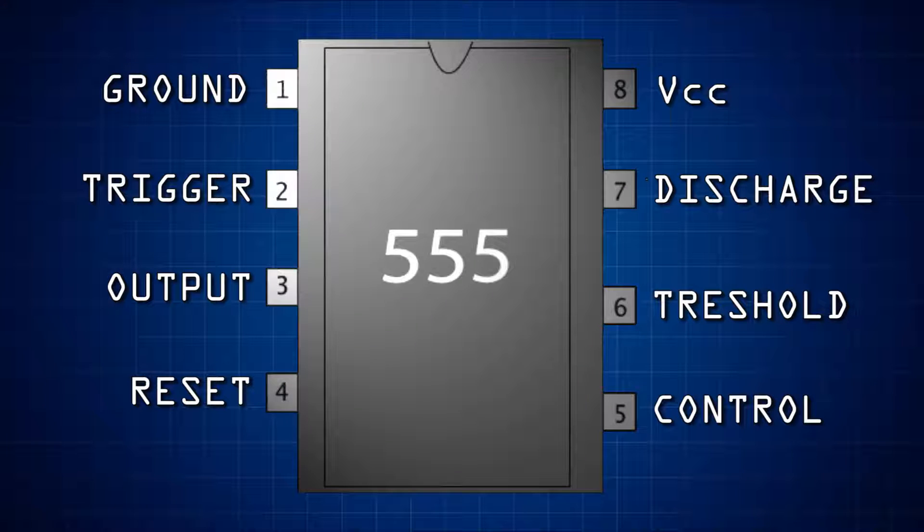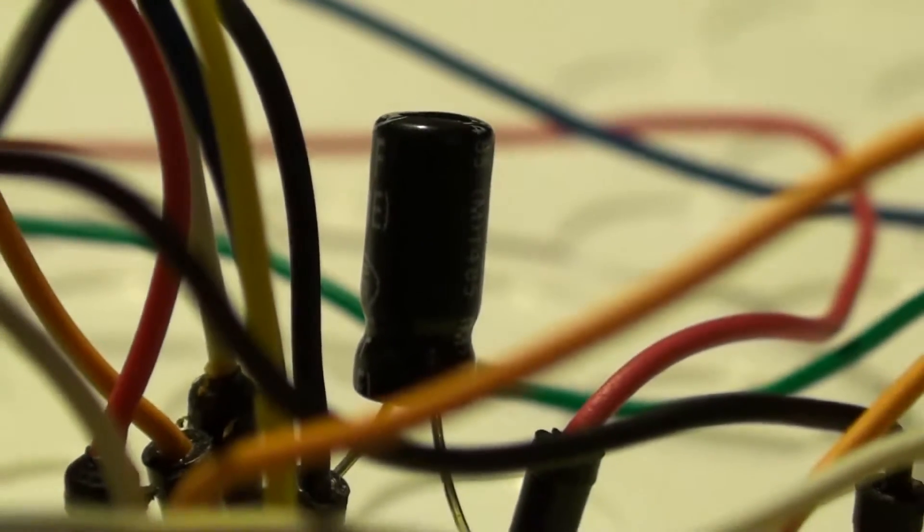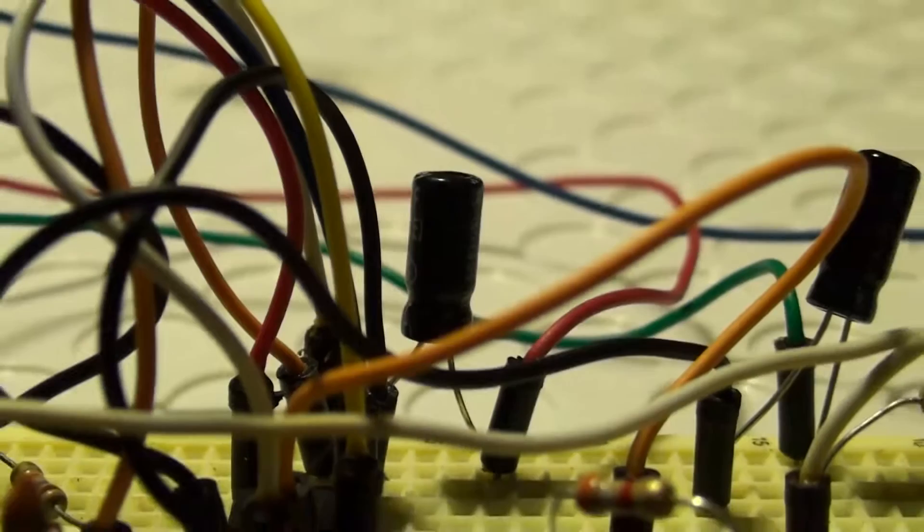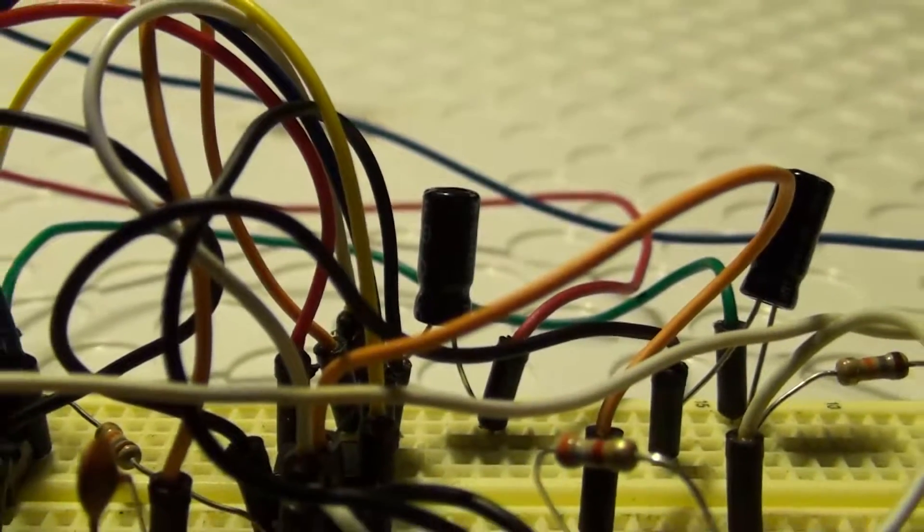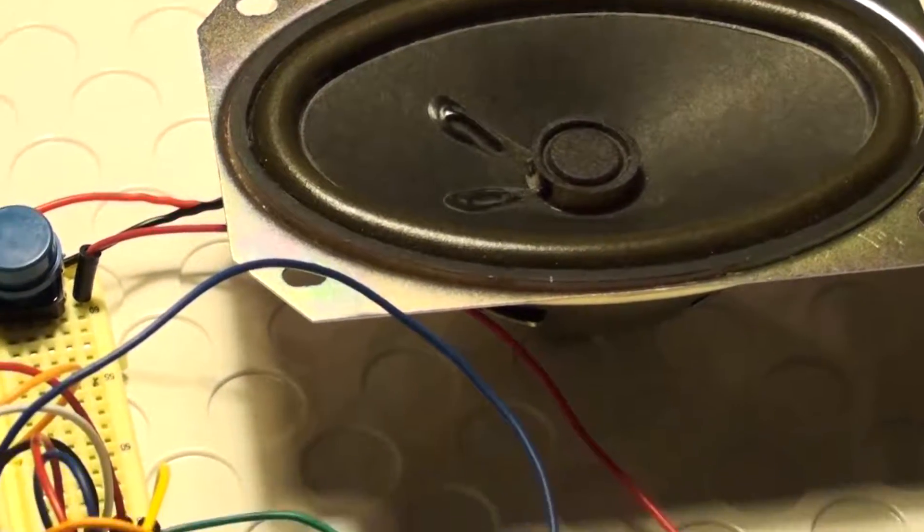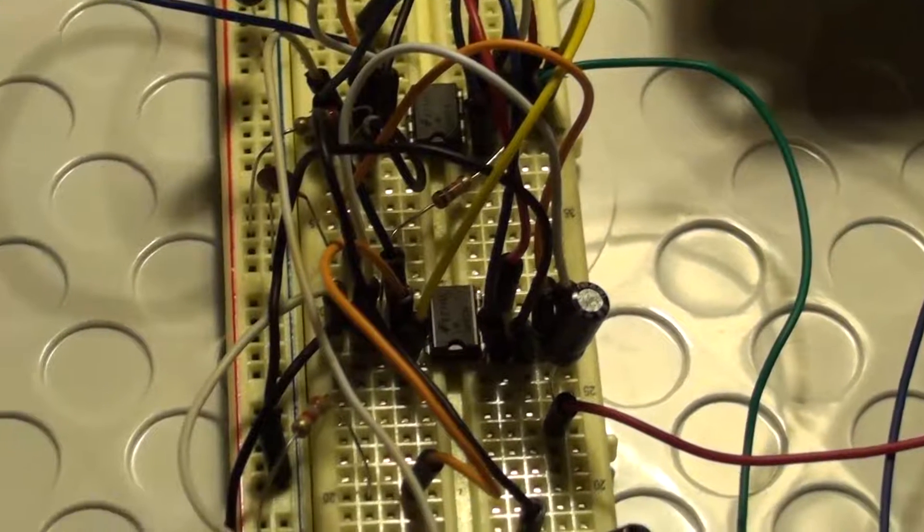The 555 timer chip uses 8 pins, each one has its own purpose. When the circuit is turned on the first capacitor is uncharged. At this moment the output signal is high and therefore the 555 timer chip starts charging the capacitor. While the capacitor charges the output is low. When the capacitor is fully charged the output is high again.